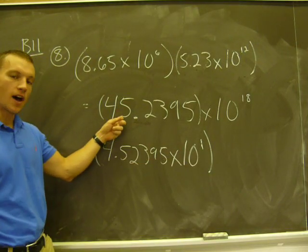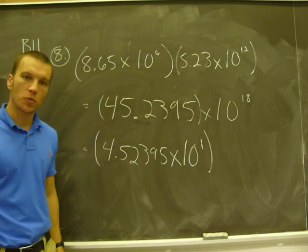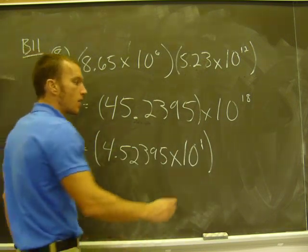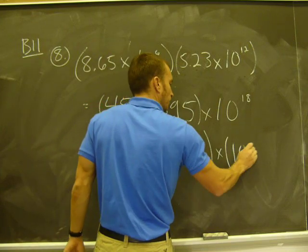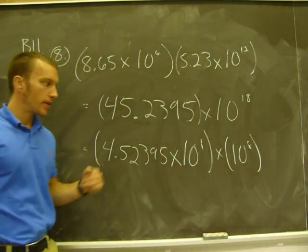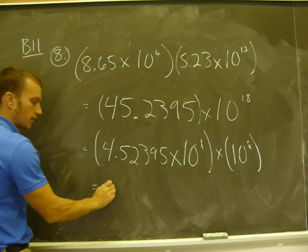That is, 45 is the same thing as 4.5 times 10 to the 1st, right? 4.5 times 10. And now I'm going to multiply by the other power of 10. So I had to do a little adjusting.